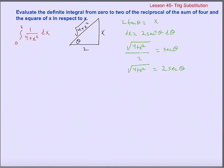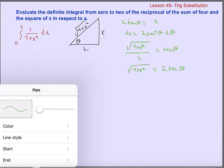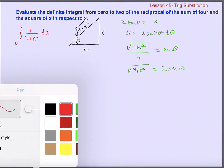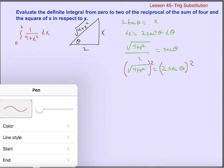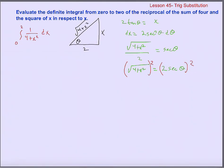I don't care about the square root of 4 plus x squared — I want to know what 4 plus x squared by itself is. I can square both sides: 4 plus x squared equals 4 secant squared theta. Now I can do my substitution.